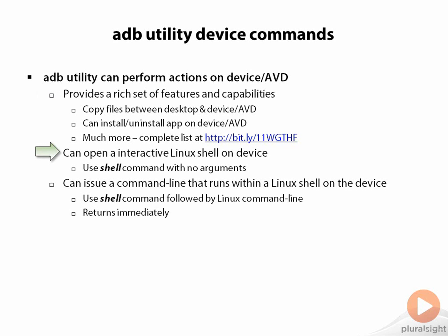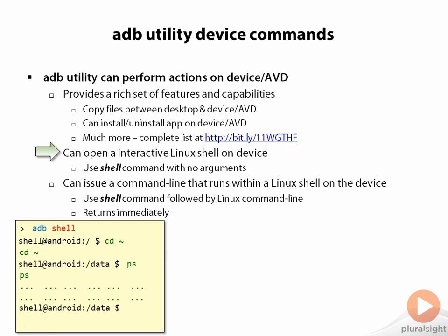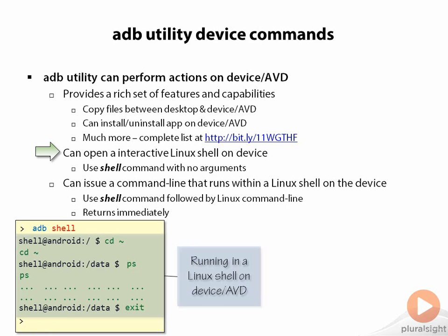One key thing ADB does that isn't available graphically is the ability to open up a Linux shell within the device. If you run ADB with the shell command argument, it will open up a Linux shell into the device. Typing ADB shell gives you back a prompt that looks like — and in fact is — a Linux prompt, where you can type Linux commands and they'll run within the shell on the device. For example, CD tilde takes you to your home directory, and the PS command shows the list of running processes on the device. Typing exit closes the shell — everything between ADB shell and exit was running in a Linux environment on the device.